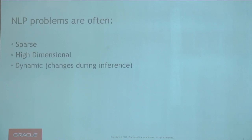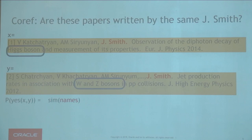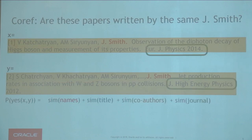I'll give you an example of a problem for which this is true — in particular, co-reference resolution. We're going to look at author co-reference resolution, where given a collection of research papers, you want to determine which authors wrote which papers. For example, are these two papers written by the same Jay Smith? We'll have a probabilistic model to answer these co-reference queries, backed by a number of different similarity metrics — similarity of names, titles of papers, co-authors, and venues. Each of these similarity metrics are themselves backed by sparse, high-dimensional representations.